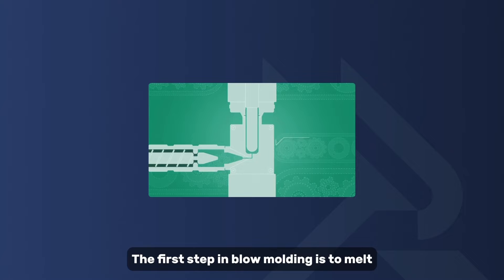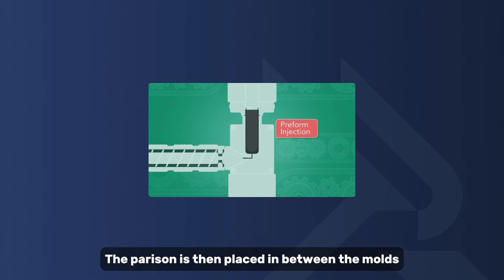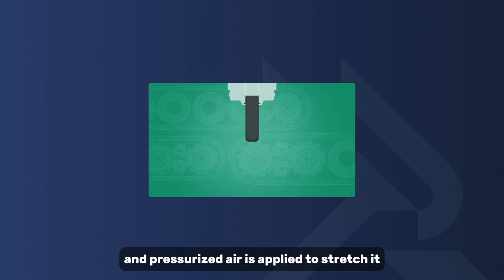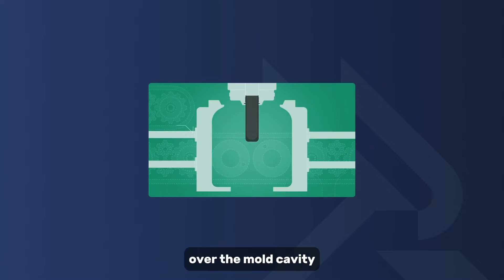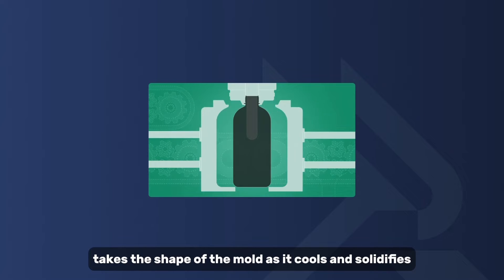The first step in blow molding is to melt and shape the plastic into a hollow tube known as a parison, or preform. The parison is then placed between the molds, and pressurized air is applied to stretch it over the mold cavity. The final part takes the shape of the mold as it cools and solidifies.